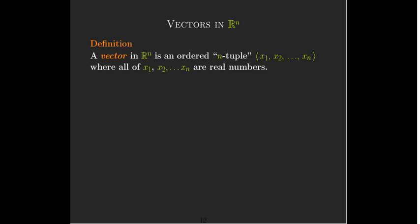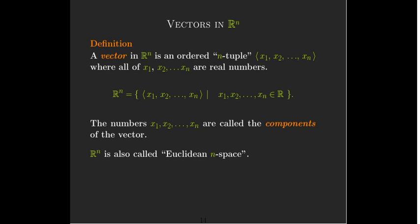The vectors have n components. I've been using this word component. And that's what we call the numbers that are listed inside the angle brackets are called the components of the vector. And Rn may be called Euclidean n space.